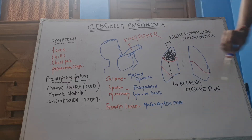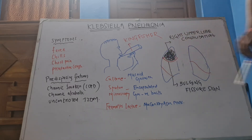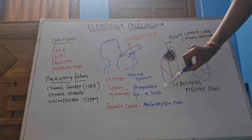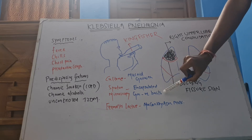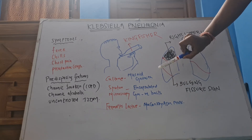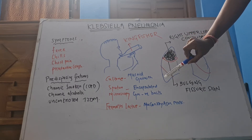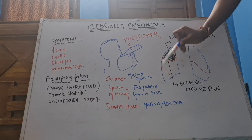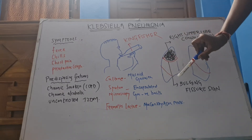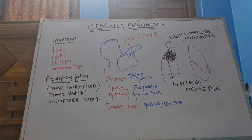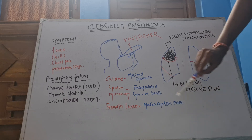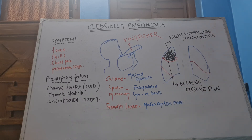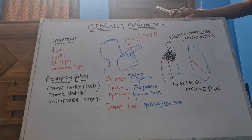For diagnosis, you take sputum culture and sputum microscopy. On culture, you will get mucoid growth. On microscopy with Gram stain, you will see encapsulated Gram-negative bacilli. Due to the capsule, there will be a clearing — a space — around the bacillus; the bacilli won't be clustered together. Since Klebsiella is a lactose fermenter, MacConkey agar will also turn pink.